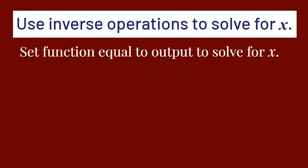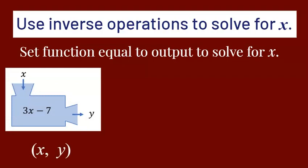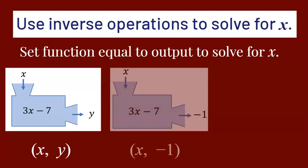We can use inverse operations to solve for y, so we can basically go backwards through our box. To do this, we will set our function equal to the output and solve for x. Let's go back to the same function machine — the input is x and the output is y. What if we already know the output is negative 1?